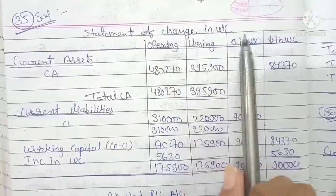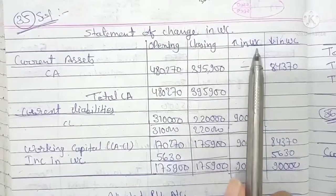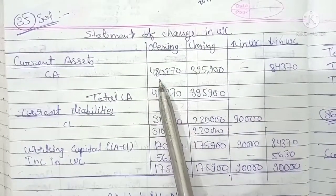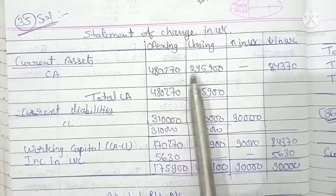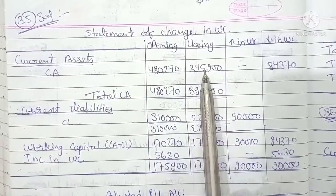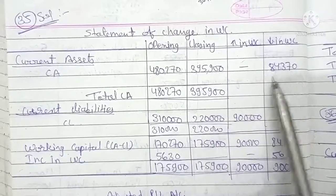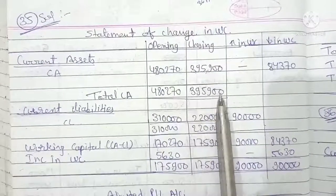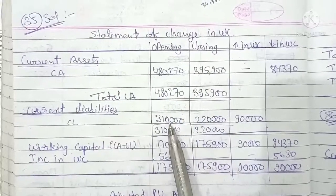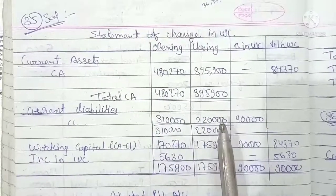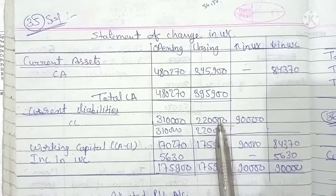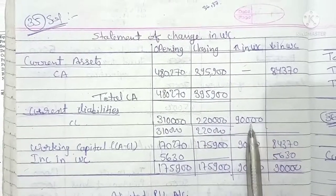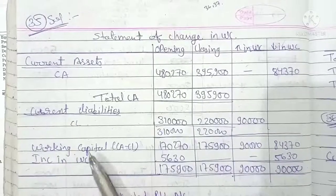In the statement of change in working capital there are 4 columns: opening, closing, increase in working capital, and decrease in working capital. Current assets were 4,80,270 and 3,95,900, so this has decreased by 84,370 — we will write it on the decrease side. Current liability was 3,10,000 and 2,20,000. When liability is reduced, that is our gain, so we write it on the decrease side.